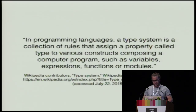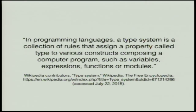The first thing we're going to check is what is a type system. The Wikipedia definition is quite hands-on. It says that in programming languages, a type system is a collection of rules — a set of rules — that assign a property called a type to various constructs composing a computer program, such as variables, expressions, functions, or modules. So it's basically just a set of rules.